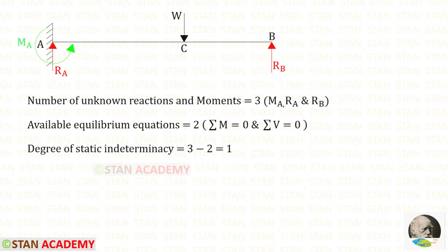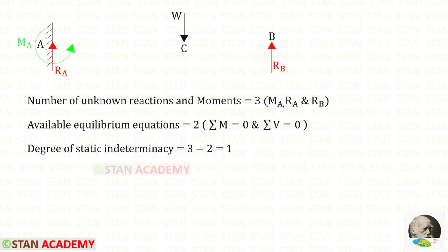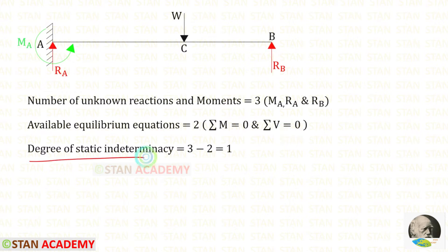Now let us find the degree of static indeterminacy. In this beam the number of unknown reactions and moments are 3: the moment MA and the vertical reactions RA and RB. The available equilibrium equations are 2: sigma MA = 0 and sigma V = 0. The degree of static indeterminacy is equal to 3 minus 2, which gives 1.